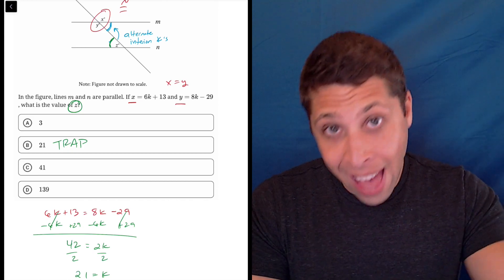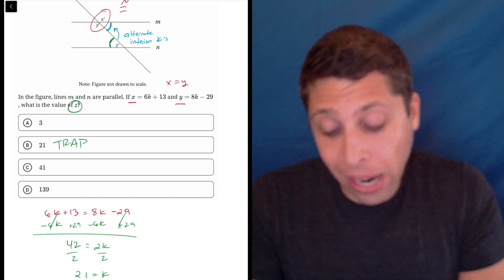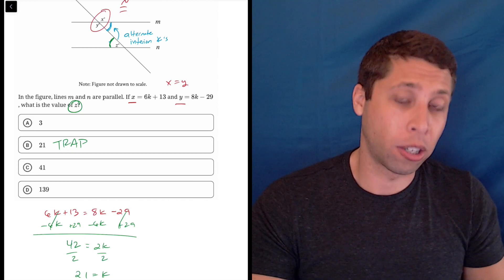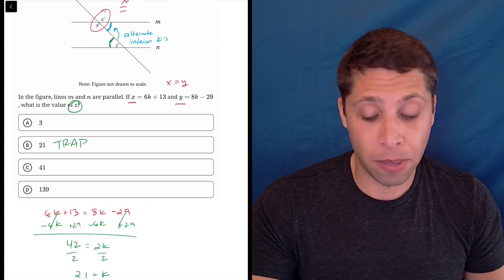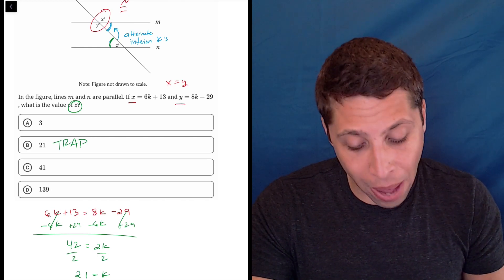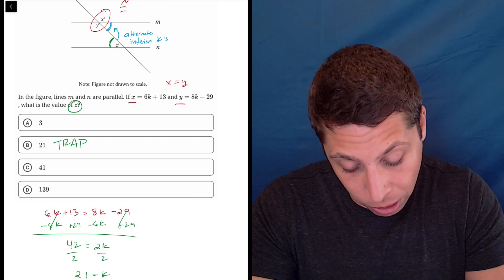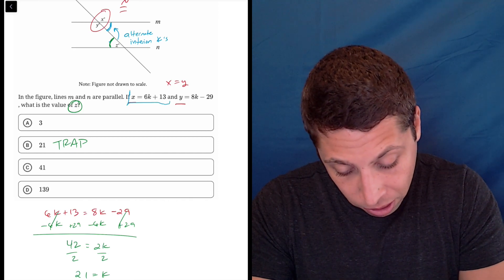So what we need to get that is the value of either X or Y because X and Y are supplementary to this, meaning they add to 180. So let's just go back to one of these equations. I'm going to pick the Y equation. Actually, let's pick the X equation because there's no minus.